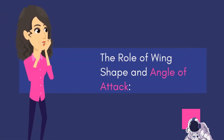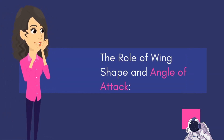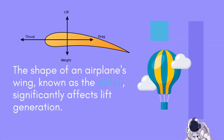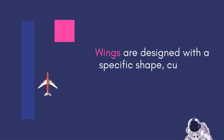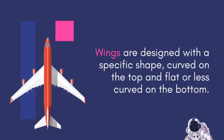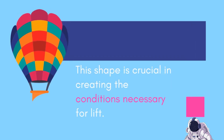The role of wing shape and angle of attack. The shape of an airplane's wing, known as the airfoil, significantly affects lift generation. Wings are designed with a specific shape — curved on the top and flat or less curved on the bottom. This shape is crucial in creating the conditions necessary for lift.